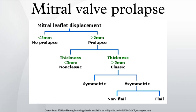Prolapsed mitral valves are classified into several subtypes based on leaflet thickness, type of connection to the mitral annulus, and concavity. Subtypes can be described as classic, non-classic, symmetric, asymmetric, flail, or non-flail. All measurements below refer to adult patients.